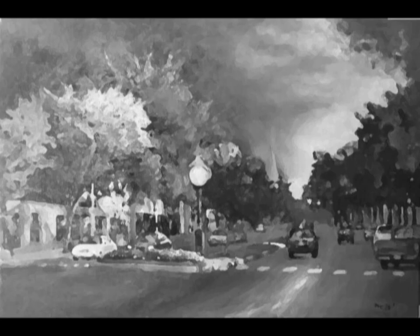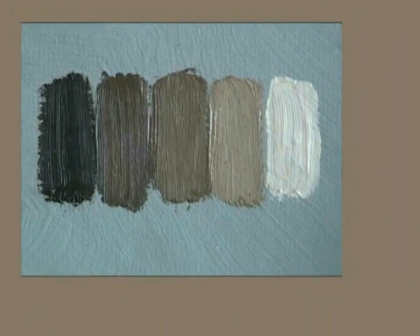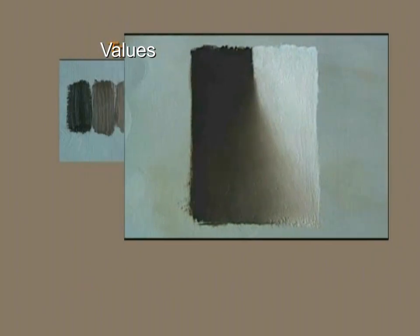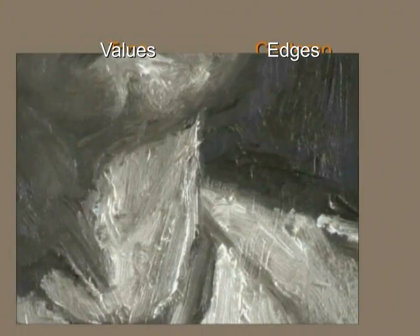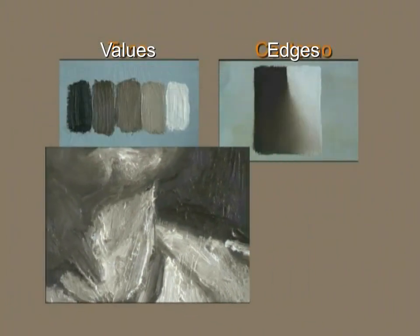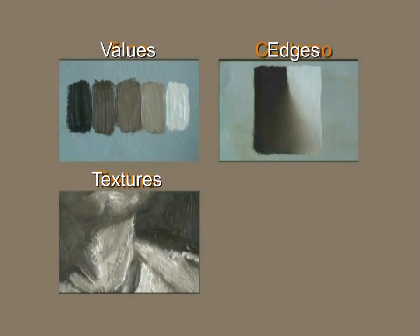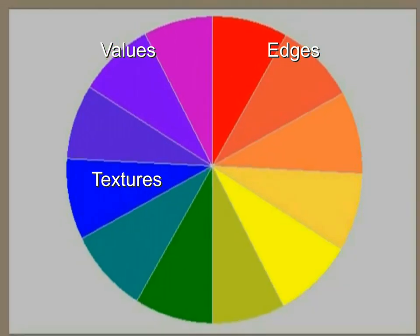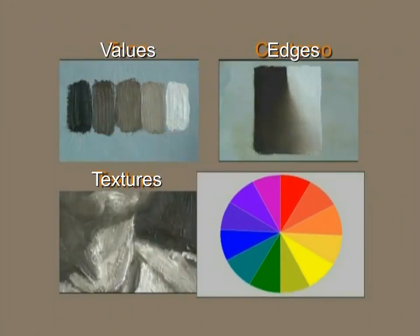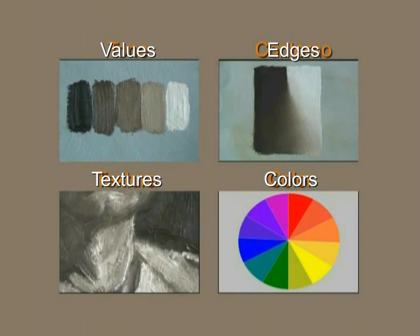Through studying monochromatic painting, we are convinced that the most important aspect in oil painting is the element of values. In addition to learning about values, we have also learned about edges and texture. Now we'll integrate these three elements to the last and very interesting element of color. Every technique consists in increasing or decreasing any of these four elements.